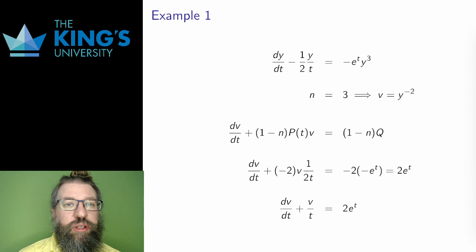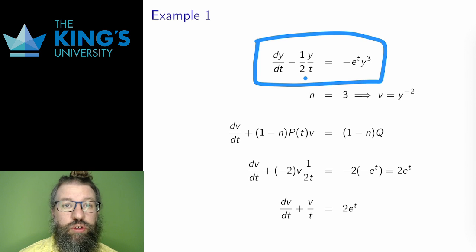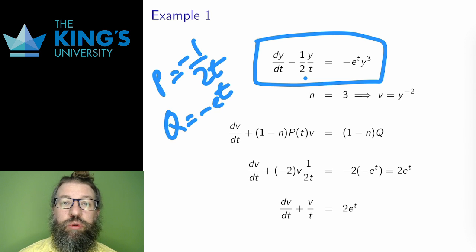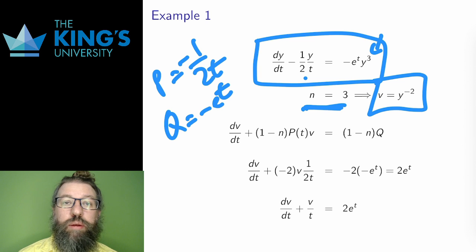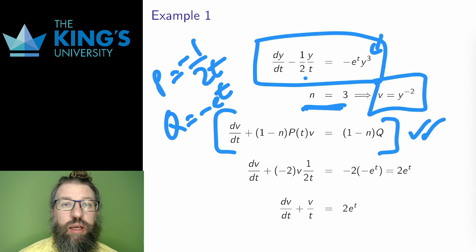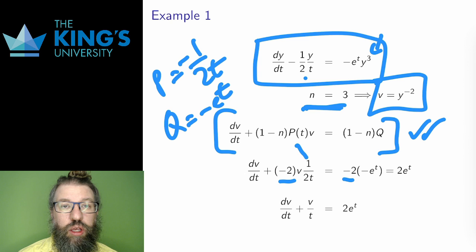Let's do some examples. Here's a Bernoulli equation: I have the derivative, y with coefficient negative 1/(2t), and q equals negative e^t times y³. So n equals 3 and the substitution is v equals y^(1−3) equals y^(−2). This turns it into a linear equation. Going directly to the new form with 1−n equals negative 2: multiplying p by negative 2 and q by negative 2 gives dv/dt plus v/t equals 2e^t — a linear equation.